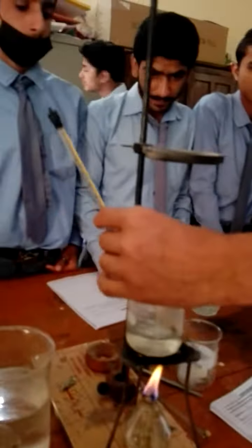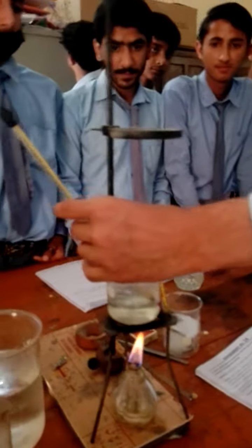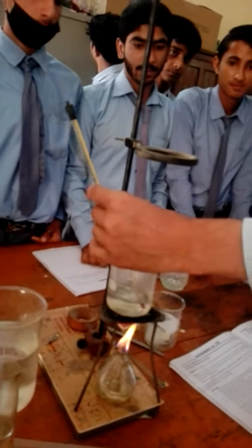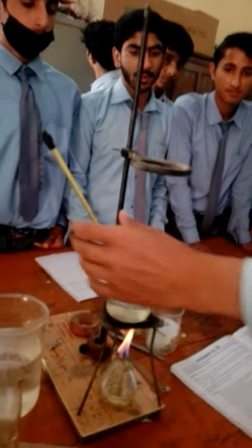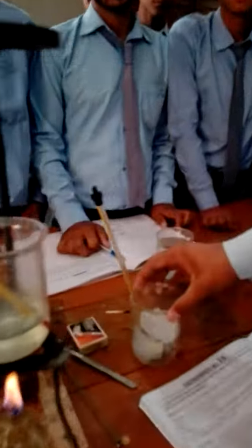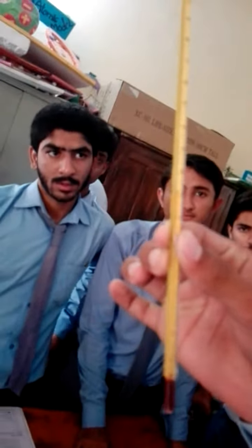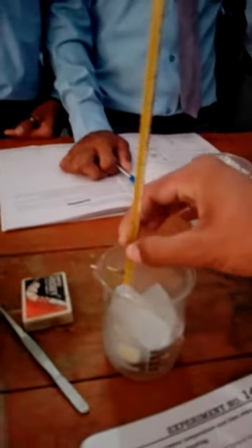Here you can see the water is boiling, and the boiling point of water is 100 degrees centigrade. Here you can also see the ice — this is a thermometer — and the freezing point of ice is less than minus 10 degrees centigrade.